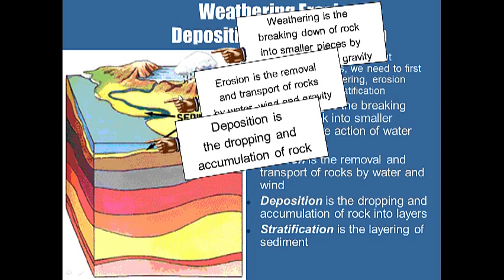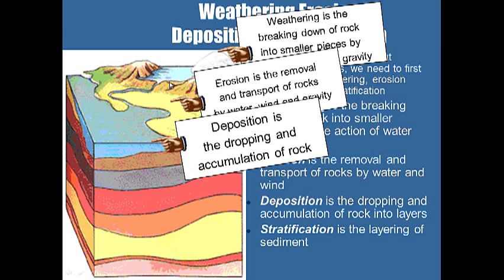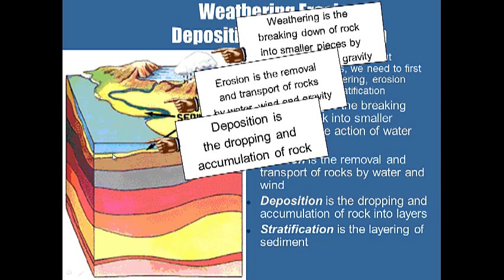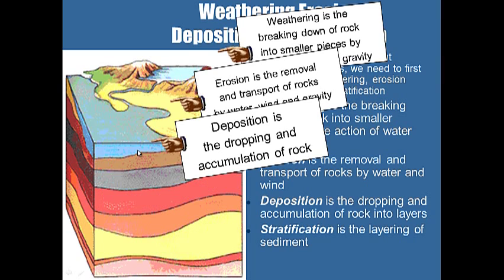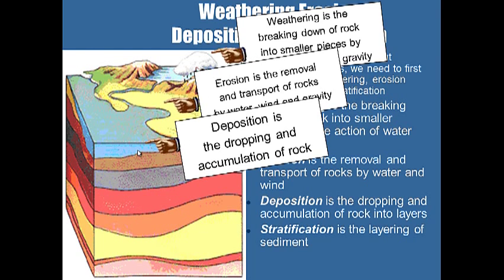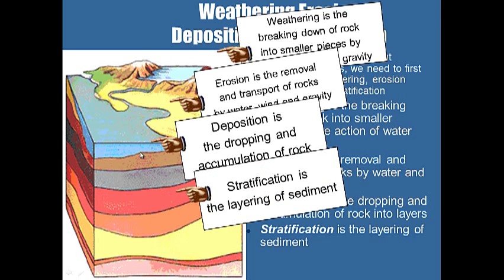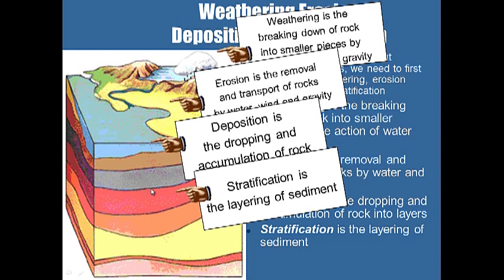Then we get deposition. As sediment, sand, and silt move down a hill, they get deposited. Deposition is the dropping and accumulation of rock in flat places — like the bottom of a lake or the bottom of an ocean.